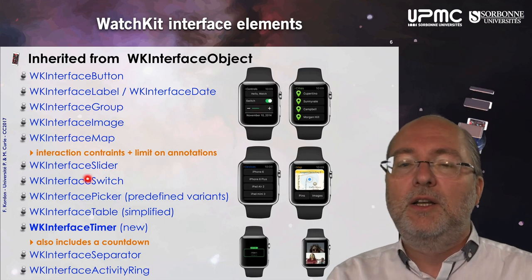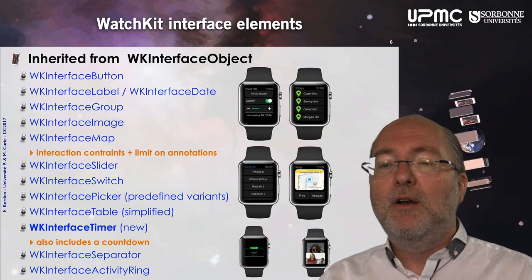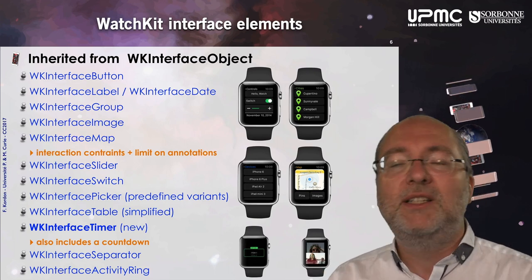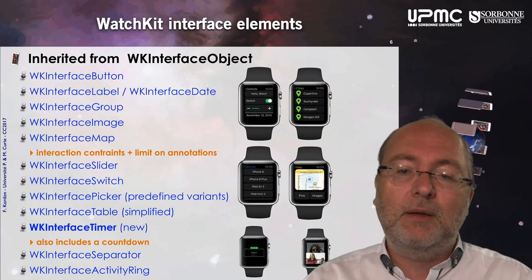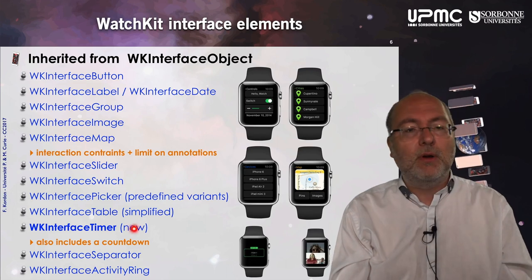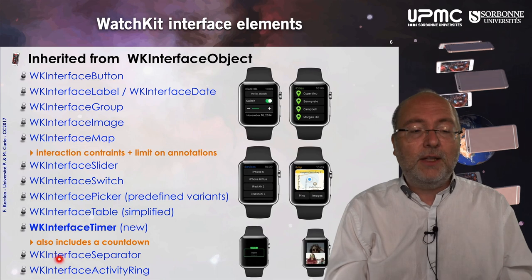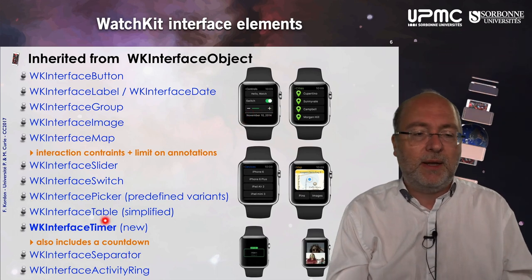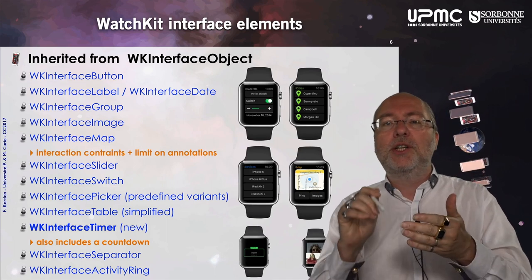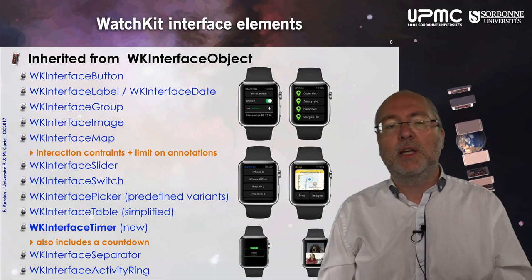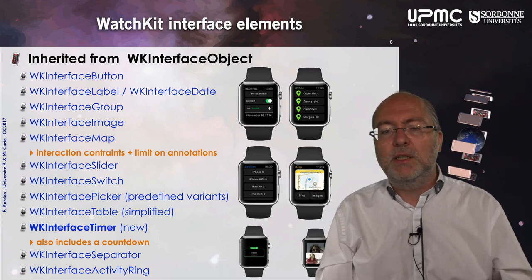You have WKInterfaceSlider, WKInterfaceSwitch, and WKInterfacePicker with predefined variants — the picker didn't exist in the first version of watchOS. There is WKInterfaceTable, a simplified version of UITableViewController. WKInterfaceTimer is a label that includes a countdown, allowing you to trigger actions. WKInterfaceSeparator is a line separator. And WKInterfaceActivityRing displays the circular progression rings you see in sport applications — in earlier versions you had to create these by hand, but now there is a dedicated mechanism.